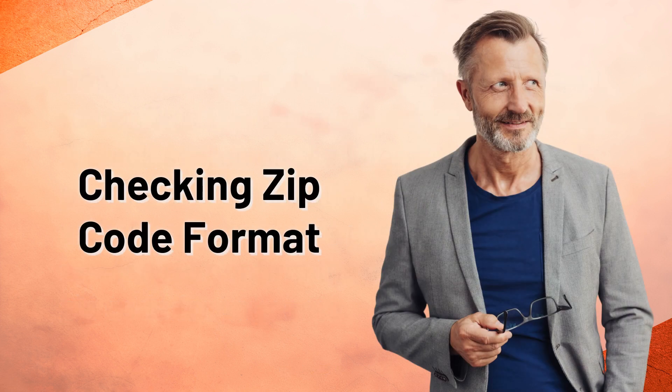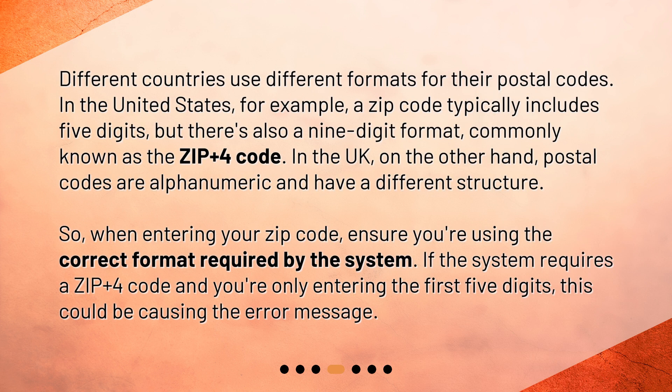Checking Zip Code Format. Different countries use different formats for their postal codes. In the United States, for example, a zip code typically includes five digits, but there's also a nine-digit format, commonly known as the ZIP Plus Four code. In the UK, on the other hand, postal codes are alphanumeric and have a different structure. So when entering your zip code, ensure you're using the correct format required by the system. If the system requires a ZIP Plus Four code and you're only entering the first five digits, this could be causing the error message.